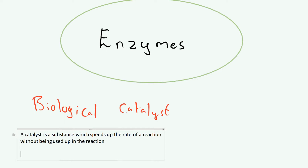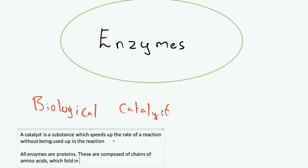One thing to note is that all enzymes are proteins — they're made by the cell themselves. All enzymes are proteins composed of chains of amino acids which fold in 3D to form an overall structure. That's important because we'll come on to how enzymes actually work. Make sure you're aware that all enzymes are proteins with 3D shapes, and you can call an enzyme a biological catalyst.